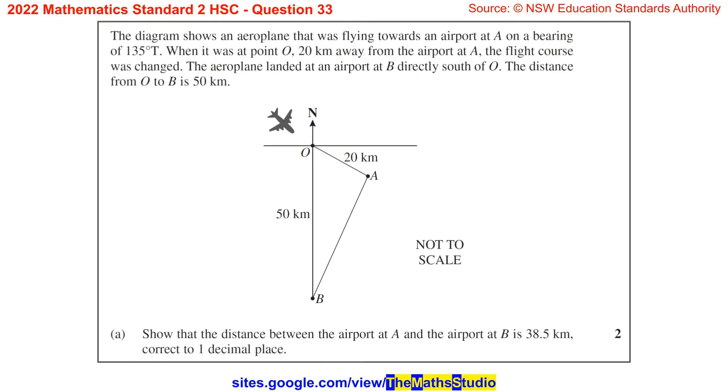The aeroplane landed at an airport at B directly south of O. The distance from O to B is 50km. Part (a): Show that the distance between the airport at A and the airport at B is 38.5km, correct to one decimal place.